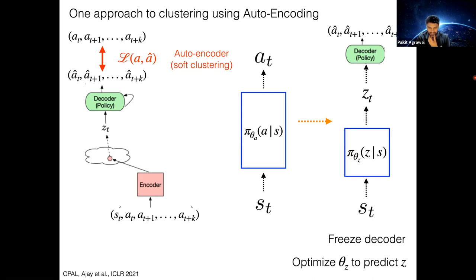There is a poll about why planning in z space leads to better performance. The options include: because it visits more diverse states, or because it reduces the time horizon of the decision process. If you're unclear about what was described, feel free to ask a question.